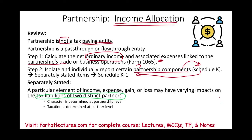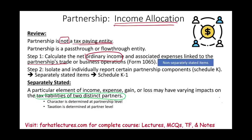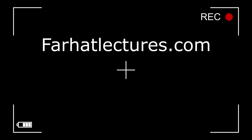The impact on their tax liability is different. The best way to illustrate this is to look at Form 1065 and see what goes there, look at Schedule K and see what goes there, look at Schedule K-1 and see how it ends up on the individual tax return. Items that go on Form 1065 are called non-separately stated items.